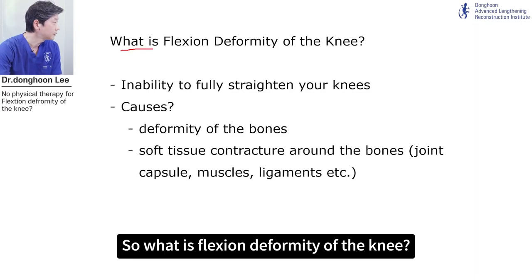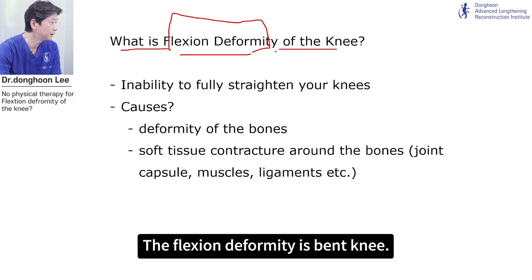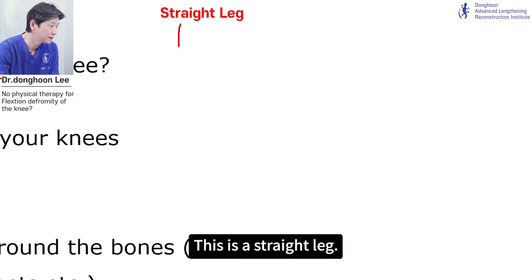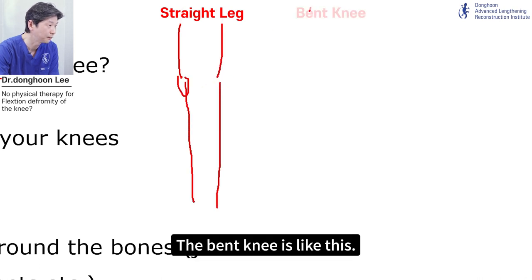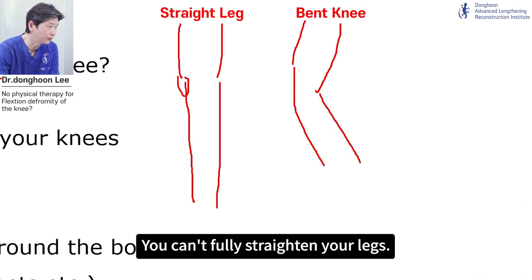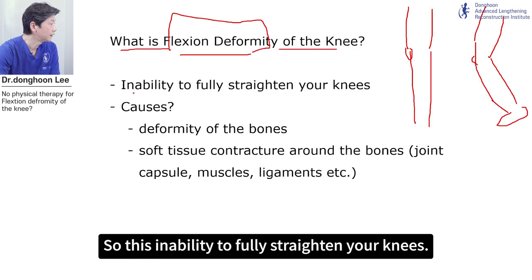So what is flexion deformity of the knee? Flexion deformity is bent knee. This is a straight leg — bent knee looks like this, where you cannot fully straighten your legs. So that's the inability to fully straighten your knees.